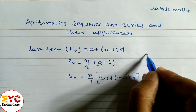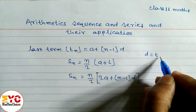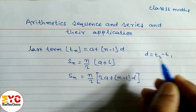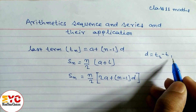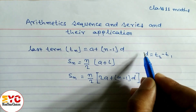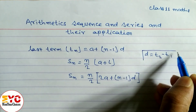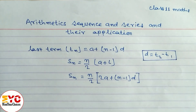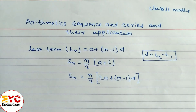To find the common difference, we have the formula: d = t2 − t1, or t3 − t2, or t(n+1) − tn. In an arithmetic sequence or series, the difference between consecutive terms will always be equal.